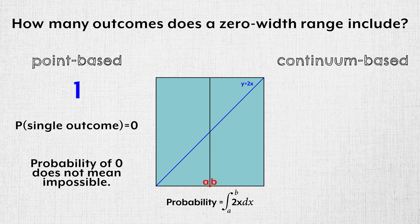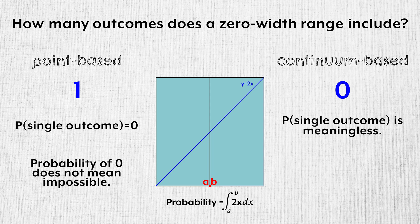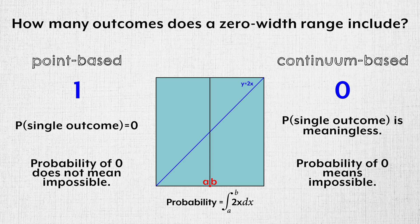With the continuum-based view, we have to say zero. Only cuts can exist within zero width ranges, and they correspond to the absence of outcomes. So with the continuum-based view, it is meaningless to talk about single outcomes. Probability density can only ever describe a cut. Probability can only ever describe a continuum. A probability of zero means a collection of outcomes is impossible. With this view, there is no paradox.